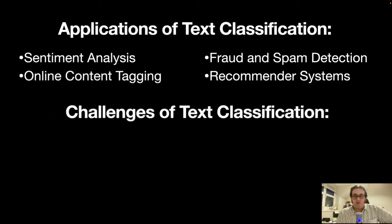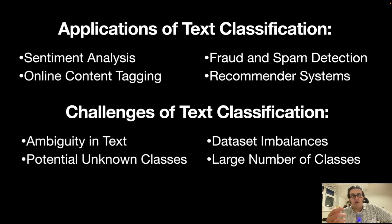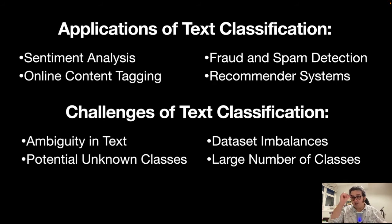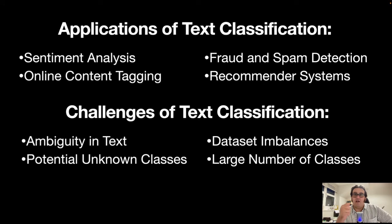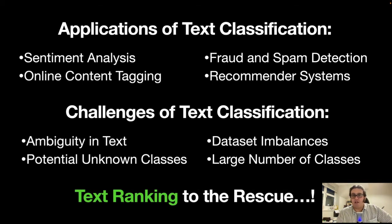However, text classification suffers from a lot of issues. For instance, we might encounter situations where we have ambiguity in text — it's not very clear what the text is actually trying to convey. It is subjective. We might have significant dataset imbalances, because as humans we produce text that is not always uniformly distributed. We have potential unknown classes, and sometimes a very large number of classes which makes simple classification an intractable problem. What we propose here is text ranking, replacing many applications of text classification in the context of natural language processing.